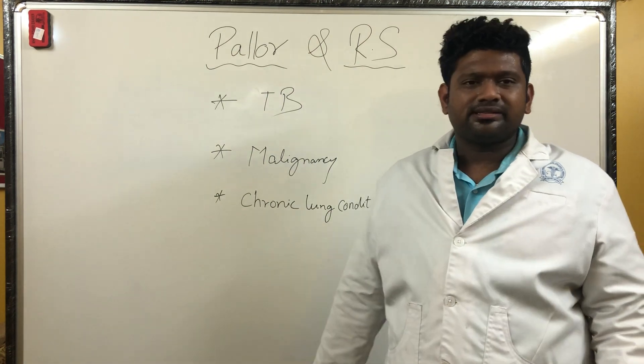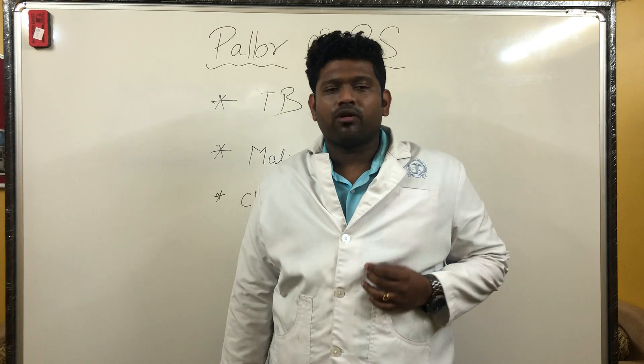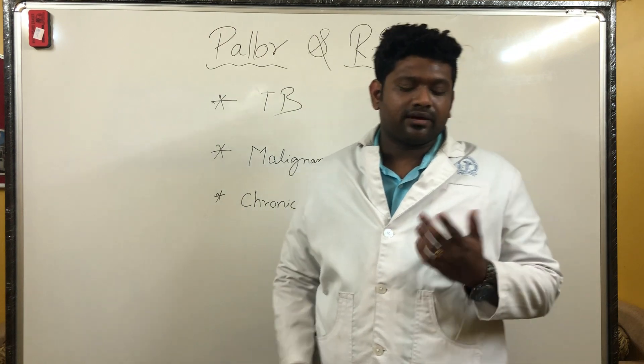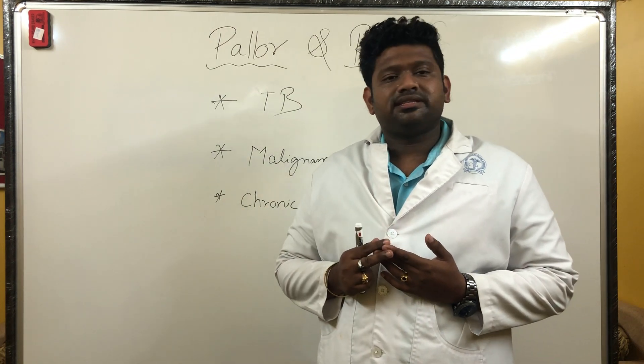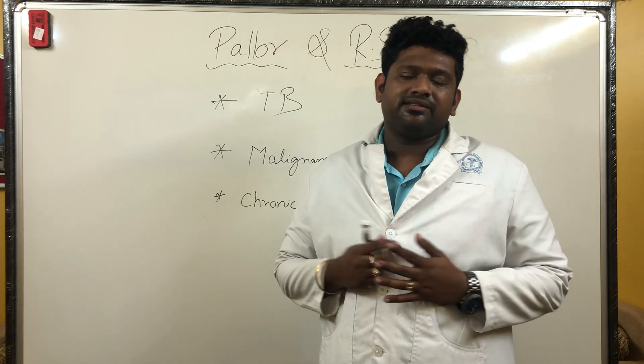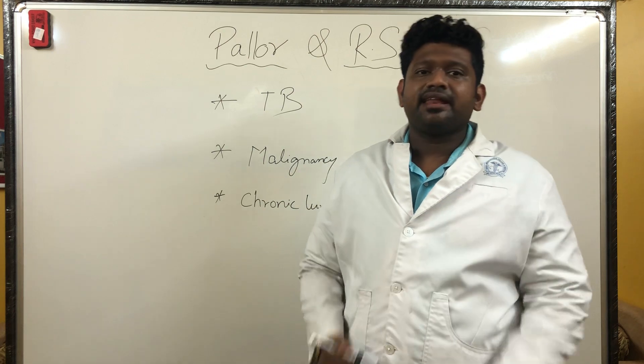For undergraduate students: the sites where we examine for pallor are the lower palpable conjunctiva, the nail beds, the palms, and the soles. These are the areas where we assess pallor.